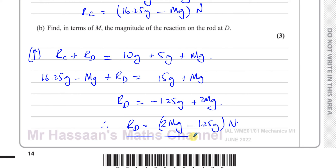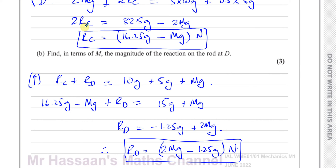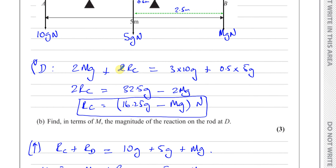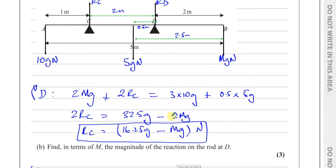So the reaction at D is 2MG minus 1.25G Newtons, expressed in terms of M. That's the answer to part B. Now we move on to part C.